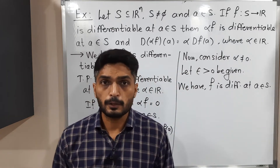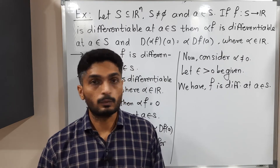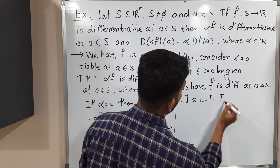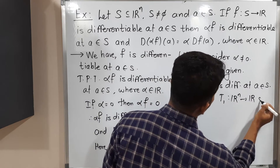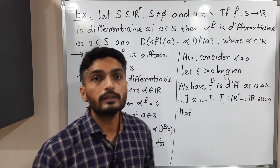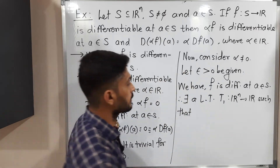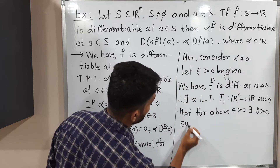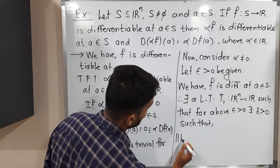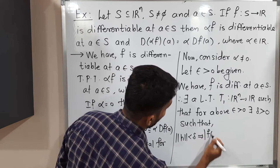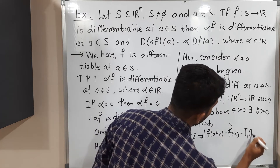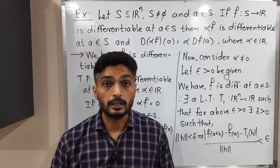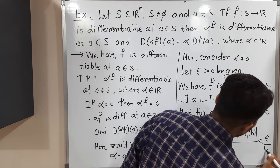Recall the definition of differentiability of a scalar field. If F is a differentiable scalar field, then there exists a linear transformation T1 from ℝⁿ to ℝ such that for the given epsilon greater than zero, there exists delta greater than zero such that: norm(H) less than delta implies |F(A+H) − F(A) − T1(H)| divided by norm(H) is less than ε/|α|. We call this statement number star.